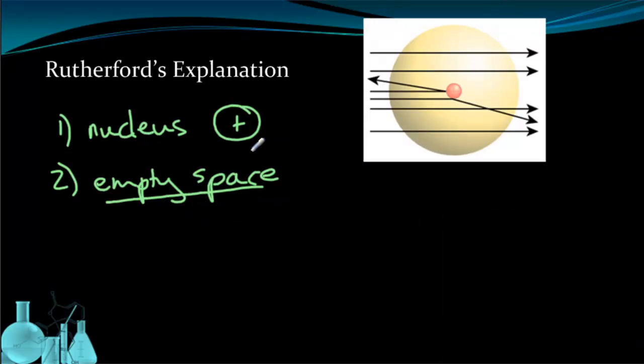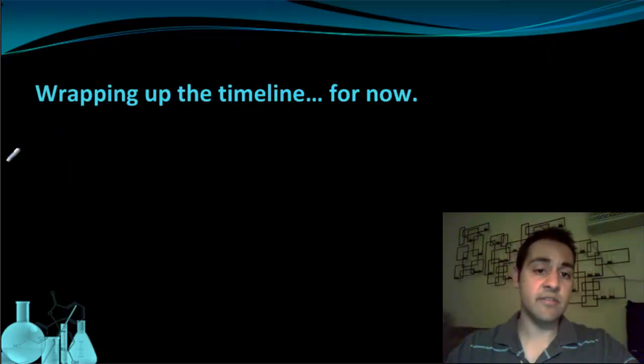Rutherford said that the electrons inhabited the empty space, but he didn't really offer much more explanation than that. He sort of adopted Thompson's idea of the electrons moving around on rotating rings. So moving on from Rutherford, we get a few more details, and we're going to wrap up this timeline for now. There's actually more to this, but here's where we're going to end for this video.